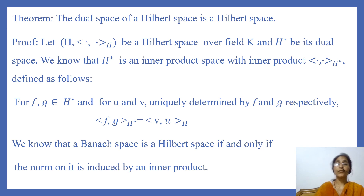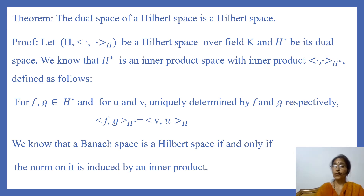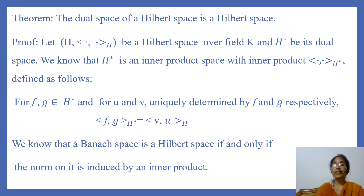We now prove the next theorem, which states that the dual space of a Hilbert space is a Hilbert space. Let H be a Hilbert space over field K and H* be its dual space. We know H* is an inner product space with inner product defined by: for F, G in H* with U, V uniquely determined by F and G respectively, ⟨F, G⟩ in H* equals ⟨V, U⟩ in H. We know that a Banach space is a Hilbert space if and only if its norm is induced by an inner product.